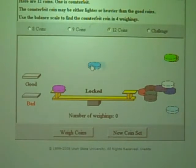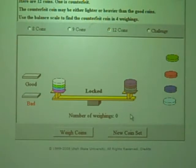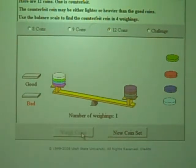So let's use that similar strategy for 12 coins, and we'll put 4 here, and then 4 coins here, and 4 coins not being weighed. And let's see what happens. Okay, that means that the counterfeit coins are on the balance right now.